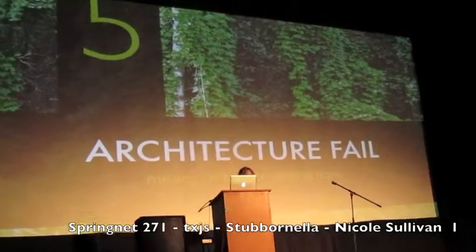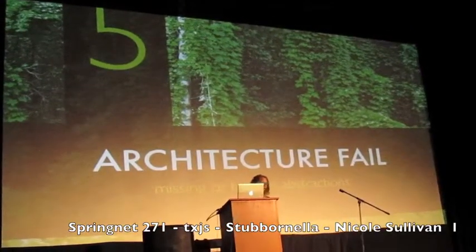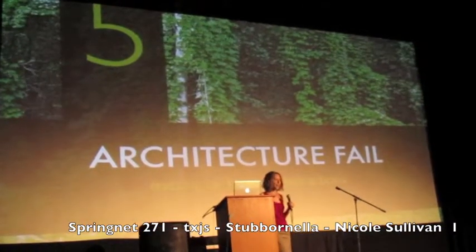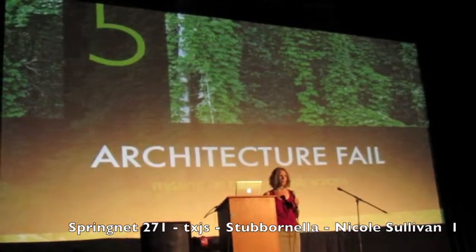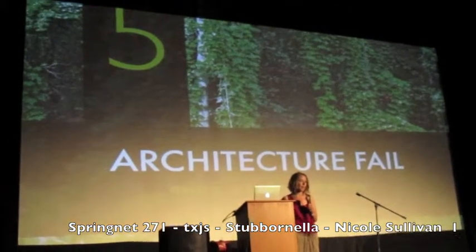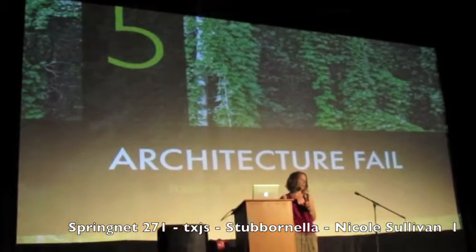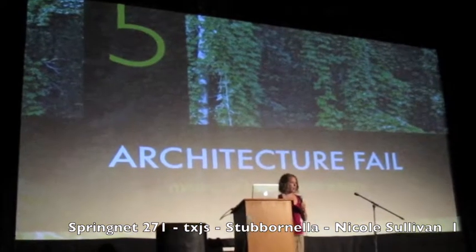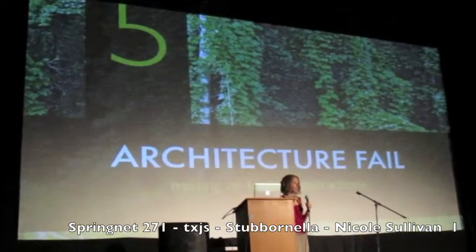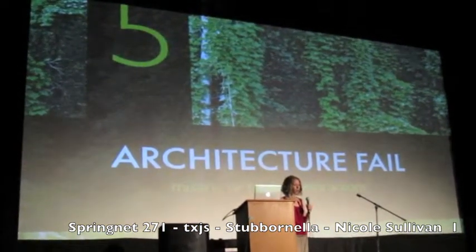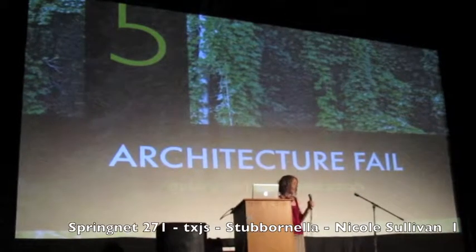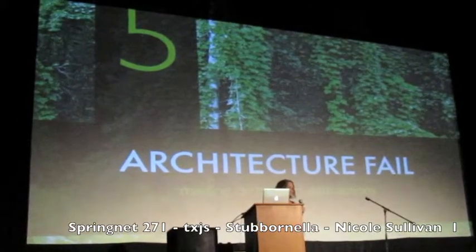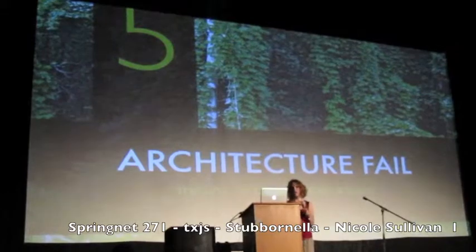First up: architecture fail — basically, completely missing abstractions. Typically, CSS has been written more by the design community than by programmers, so we didn't even think necessarily that we should have abstractions. It was kind of organic. It sort of grew very much like Kudzu — on its own, with no sense of architecture.